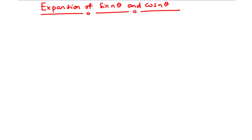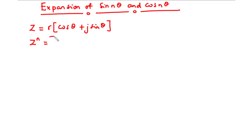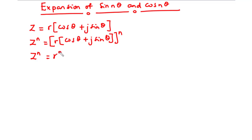Still under complex numbers, let's focus on the expansion of sin(nθ) and cos(nθ) where n is a positive integer. A complex number can be represented in the polar form as z = r(cos θ + j sin θ), and according to De Moivre's theorem, z^n = r^n(cos θ + j sin θ)^n, which simplifies to z^n = r^n(cos nθ + j sin nθ). Let's call this equation one.